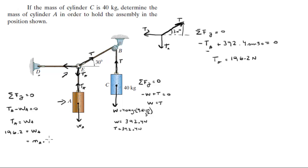So 196.2 is equal to the weight of A. You also know that the weight of A is equal to the mass of A times the acceleration of gravity, which is 9.81 meters per second squared. So if you solve for the mass of A by dividing 196.2 by 9.81, you're going to get that the mass of A is exactly 20 kilograms.